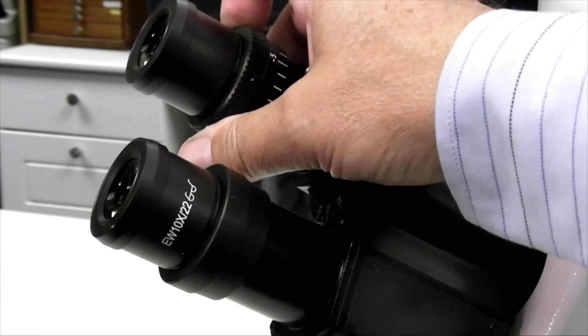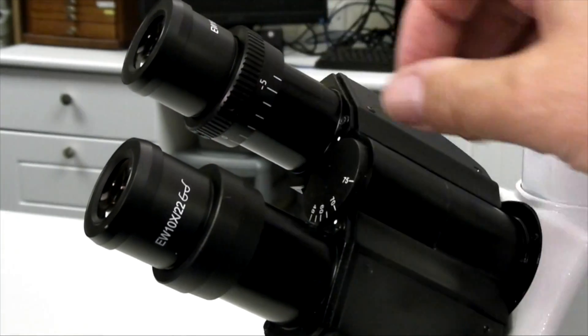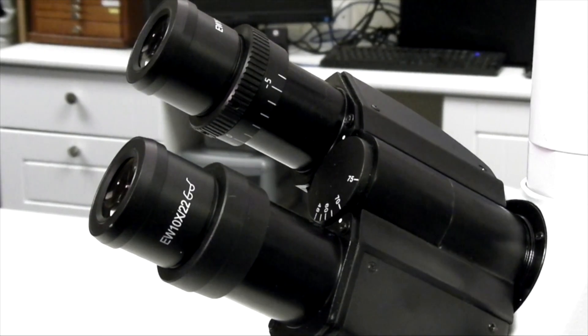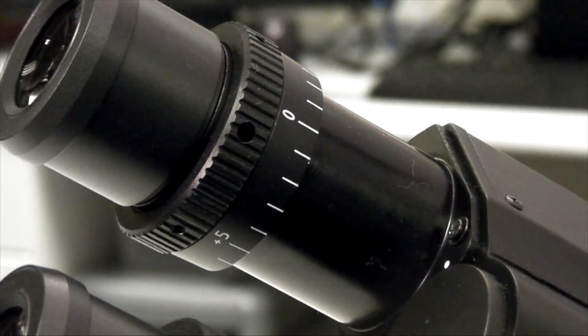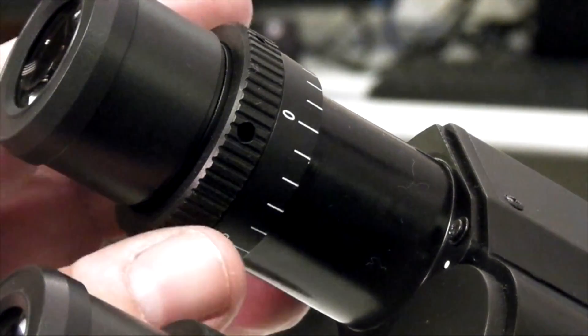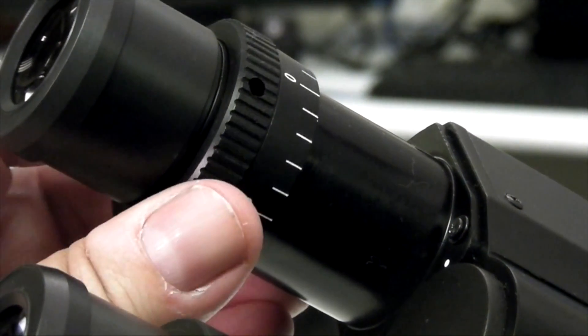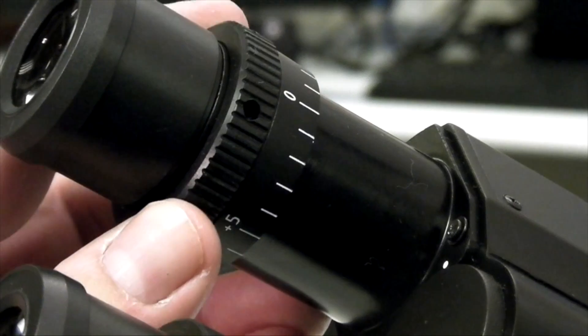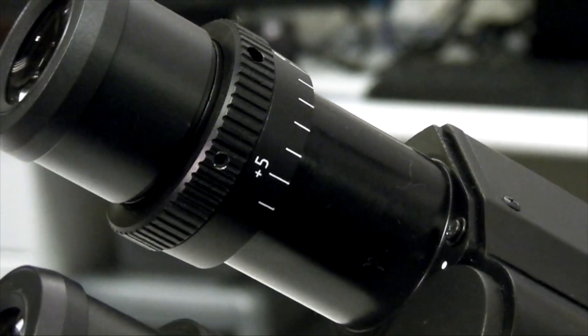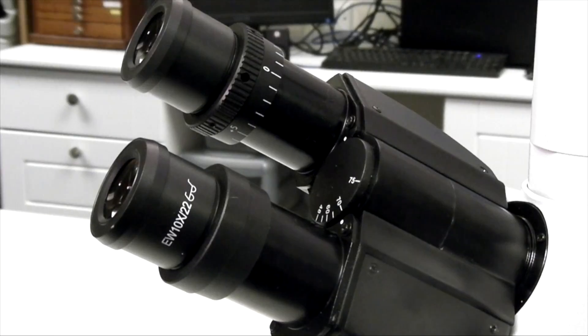Focus the specimen with the microscope controls. Close this eye and open the other, and without altering the controls of the microscope, move the dioptric ring of the focusing eye tube in either direction until the specimen is in focus for that eye as well. The binocular head is now aligned for distance between the eyes.